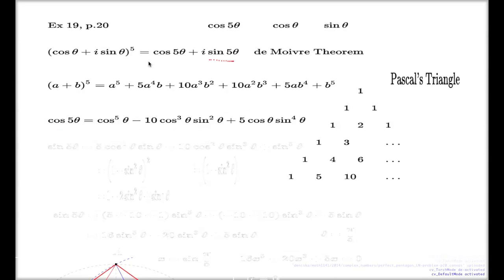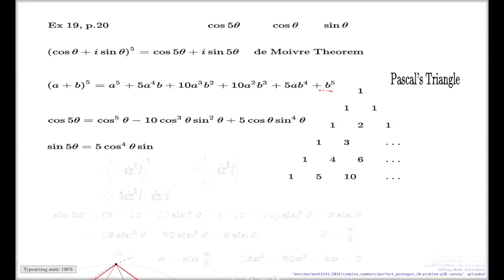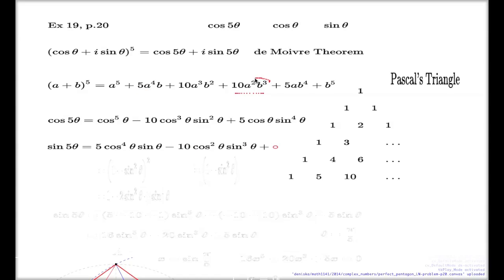Similarly, we can find the expression for the imaginary part by taking odd powers of b from this expansion. The expression for sin(5θ) will be 5·cos^4·sin(θ) from here, negative 10·cos^2·sin^3 from here — because i^3 gives me negative i, that's why we have the negative — and the very last term from here.